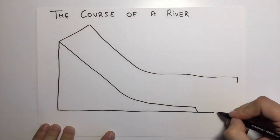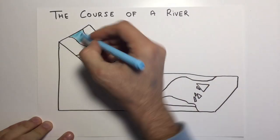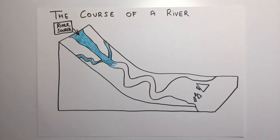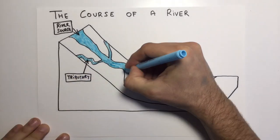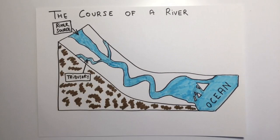Let's talk now about the course of a river. The course of a river is the route of the river from its source to its mouth. If the main river finds other rivers, these are called tributaries.